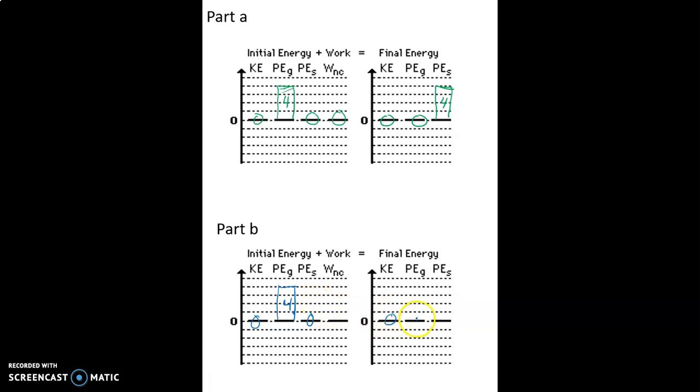We still don't have any spring energy there. We don't end with any kinetic energy or gravitational potential energy. And we do end with some spring energy but not as much as before. This was based on a delta x of 0.51, that's how much the spring was compressed. Instead of 0.51 now it's only compressed 0.41.